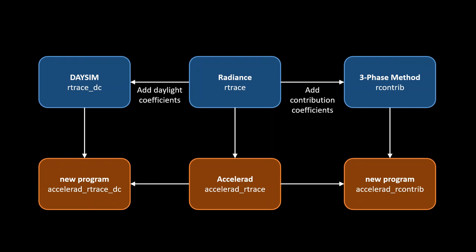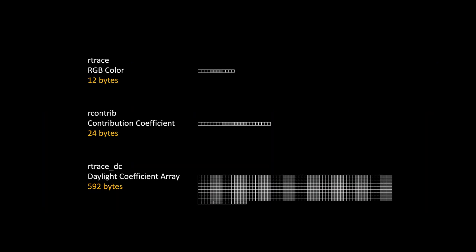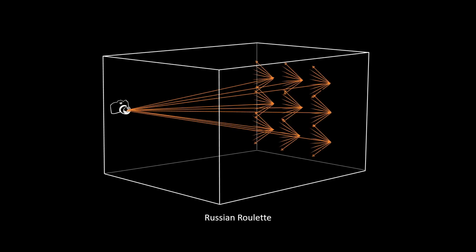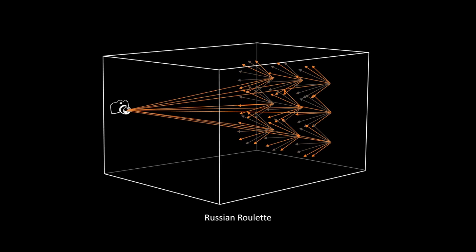There are two key differences between rtrace and the modified programs. First, while rtrace calculates color, rcontrib calculates contribution coefficients—taking up twice as much storage—and rtrace-DC stores a daylight coefficient array per ray, requiring significantly more memory, which degrades GPU performance due to the parallel memory demands. Second, rtrace-DC uses irradiance caching as before, while rcontrib uses Russian roulette—arbitrarily culling some rays to speed up calculation.